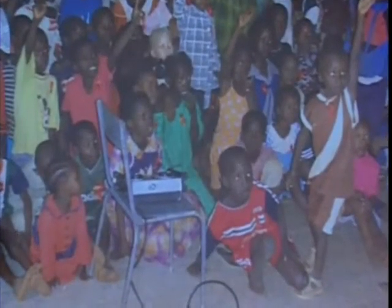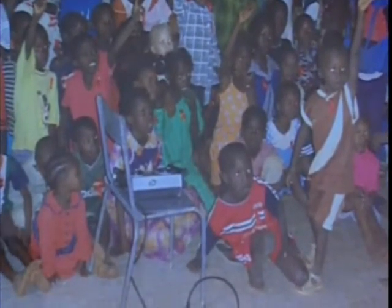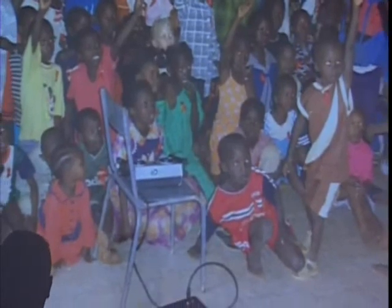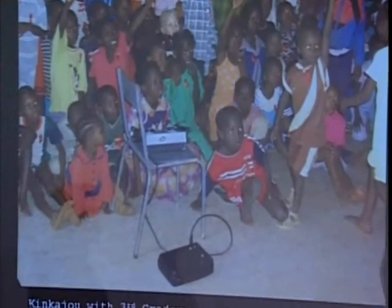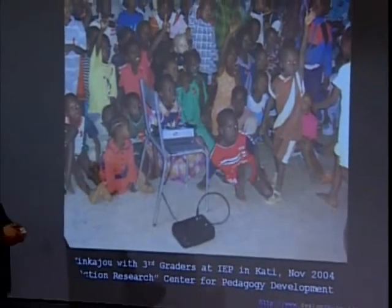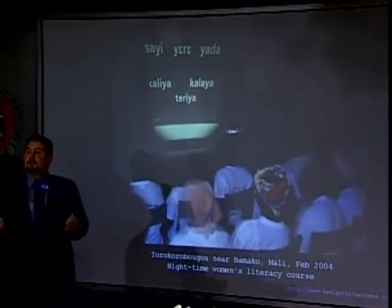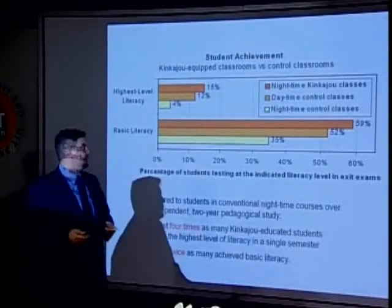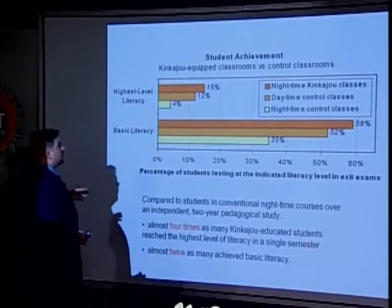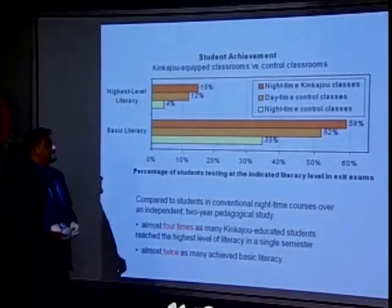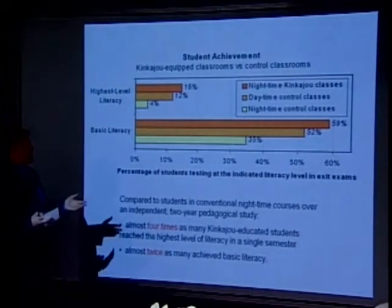This is a picture of the kinkajou outside a classroom in rural Mali, demonstrating the image size for teachers. We've been looking for different markets where we can apply this product. This is a third-grade class in rural Mali, and this is a class picture from a nighttime women's literacy education class. I know a lot of people want to see numbers, so let's look at some.